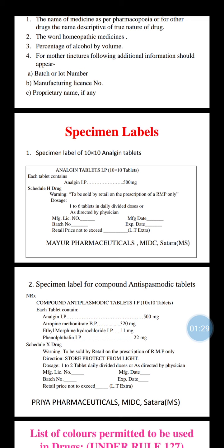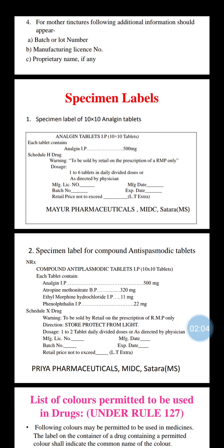The specimen label includes the title written as 'Analgin Tablet IP,' the quantity, and each tablet's ingredients with their respective quantities. It also includes the schedule containing drug warning: 'to be sold by written prescription of a Registered Medical Practitioner (RMP) only.' Dose is 1 to 6 tablets daily in divided doses. The label also shows manufacturing license number, batch number, retail price not to exceed, manufacturing date, and expiry date.